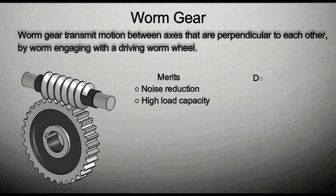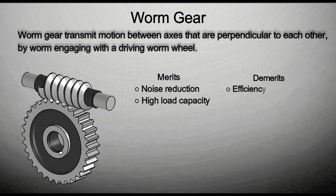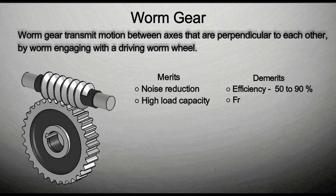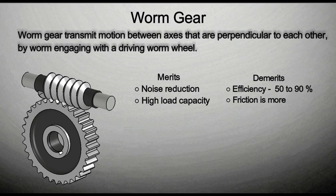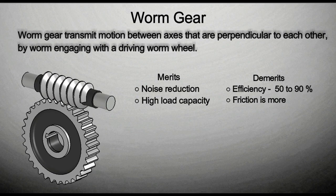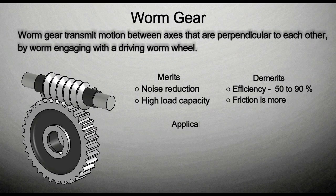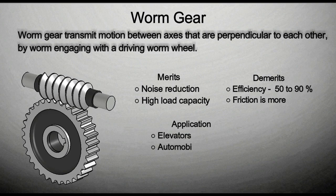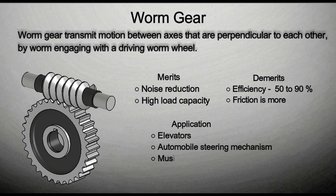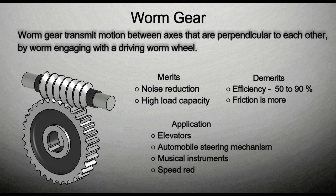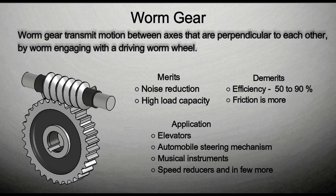Demerits are lower performance. Efficiency ranges between 50 to 90 percent. Friction is more which causes wear and tear of worm gear. Worm gears are used in elevators, automobile steering mechanisms, musical instruments, speed reducers and in few more applications.